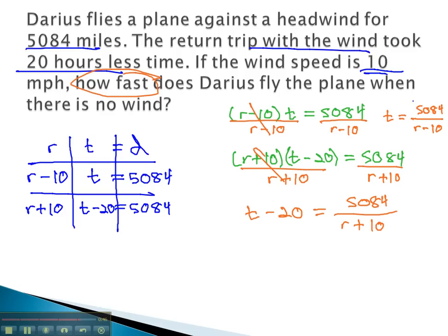We are now ready to substitute, replacing the time in the second equation with 5,084 over r minus 10 minus 20 equals 5,084 over r plus 10. This would give us a rational equation that we could now solve to find the rate which Darius flies when there's no wind.